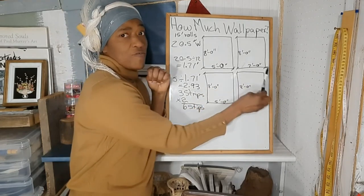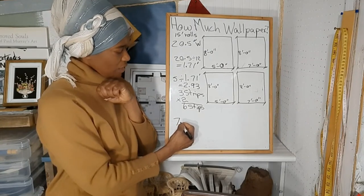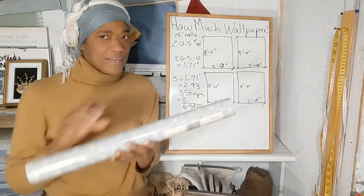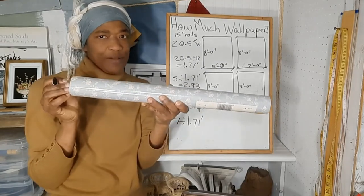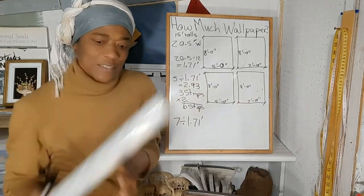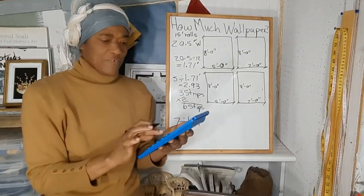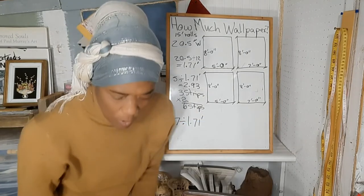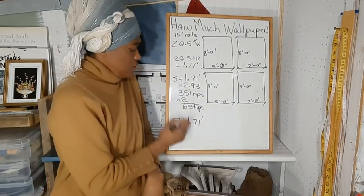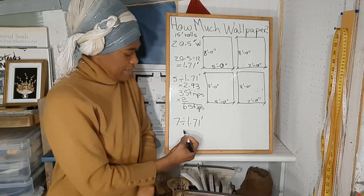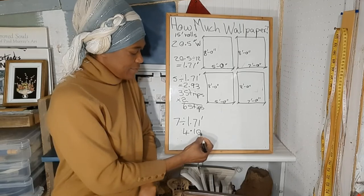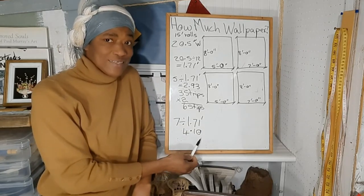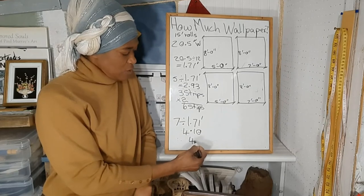So now we need to figure out how many widths we need to go across a 7-foot wall. So we take 7 and we divide by 1.71 feet, and again that is because the width of the wallpaper is 1.71 feet. So 7 divided by 1.71 equals 4.10. We'll go ahead and just round down the 4.10 to 4, so we need 4 strips.